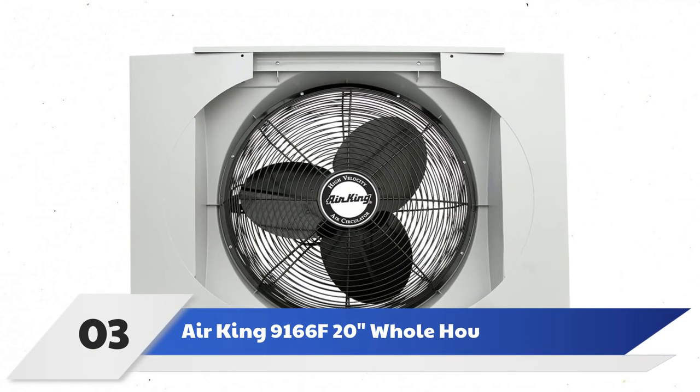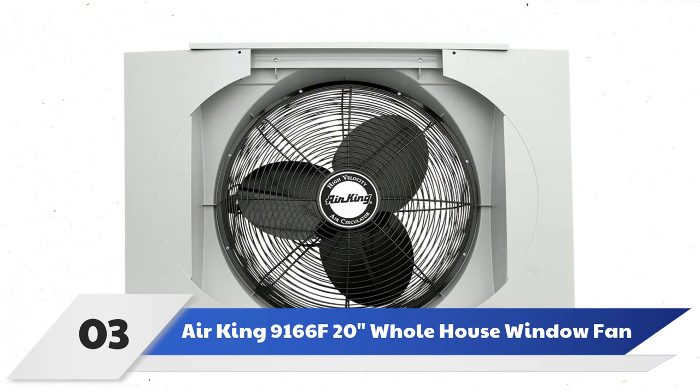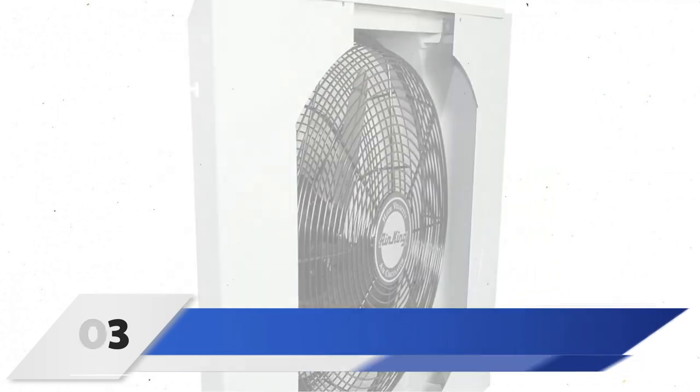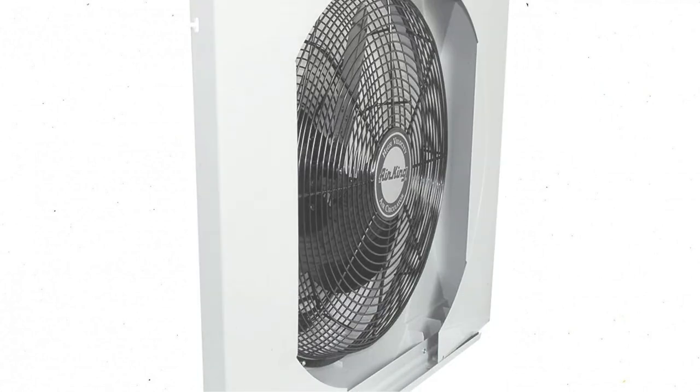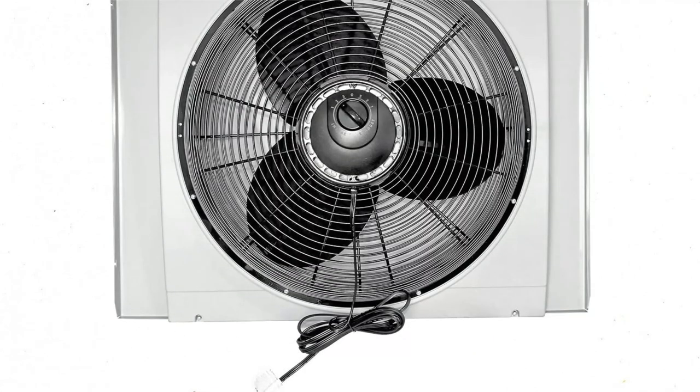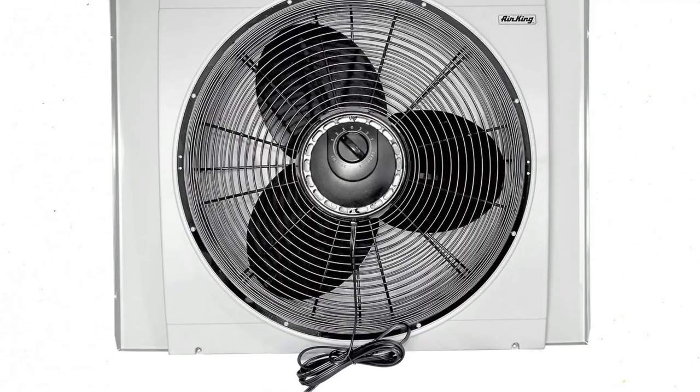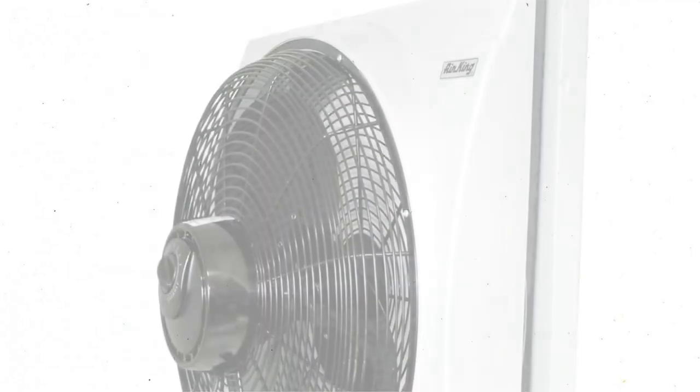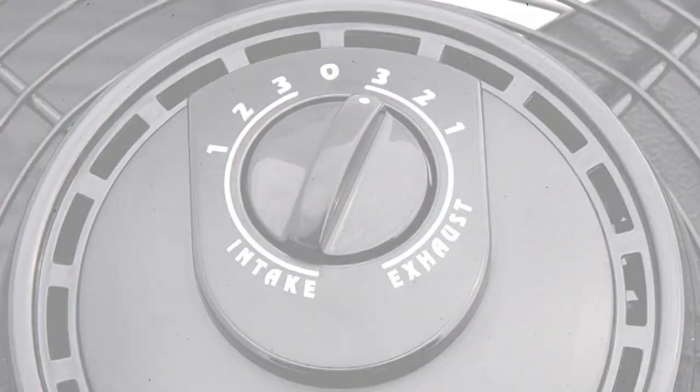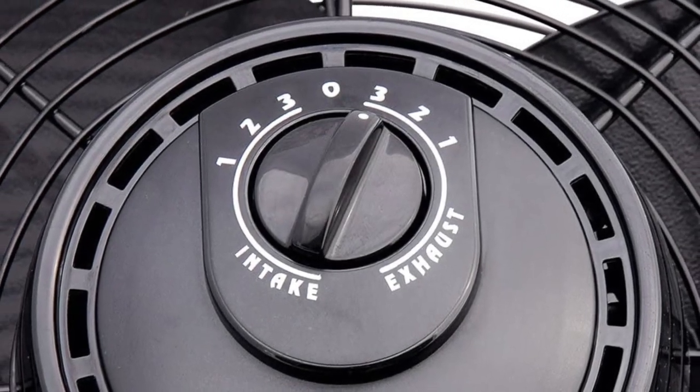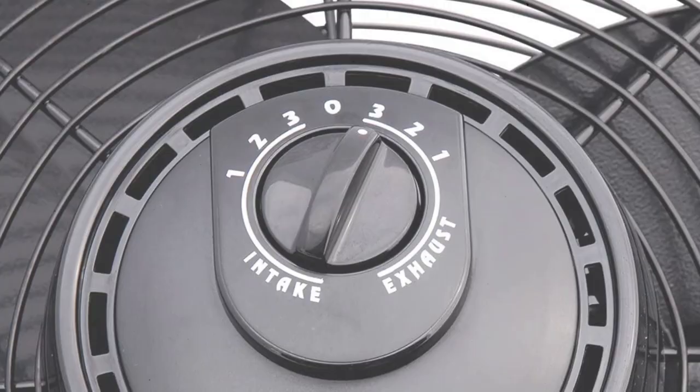Number 3. Air King 9166F 20-Inch Whole House Window Fan. Not everyone can, or wants to, cut into their ceilings or walls to install a whole house fan, and Air King's 20-Inch Whole House Window Fan is an attractive choice for those who fall into that category. When installed in a home's upper-level window, this fan pushes warm interior air out and replaces it with fresh air drawn from open windows on the lower level.